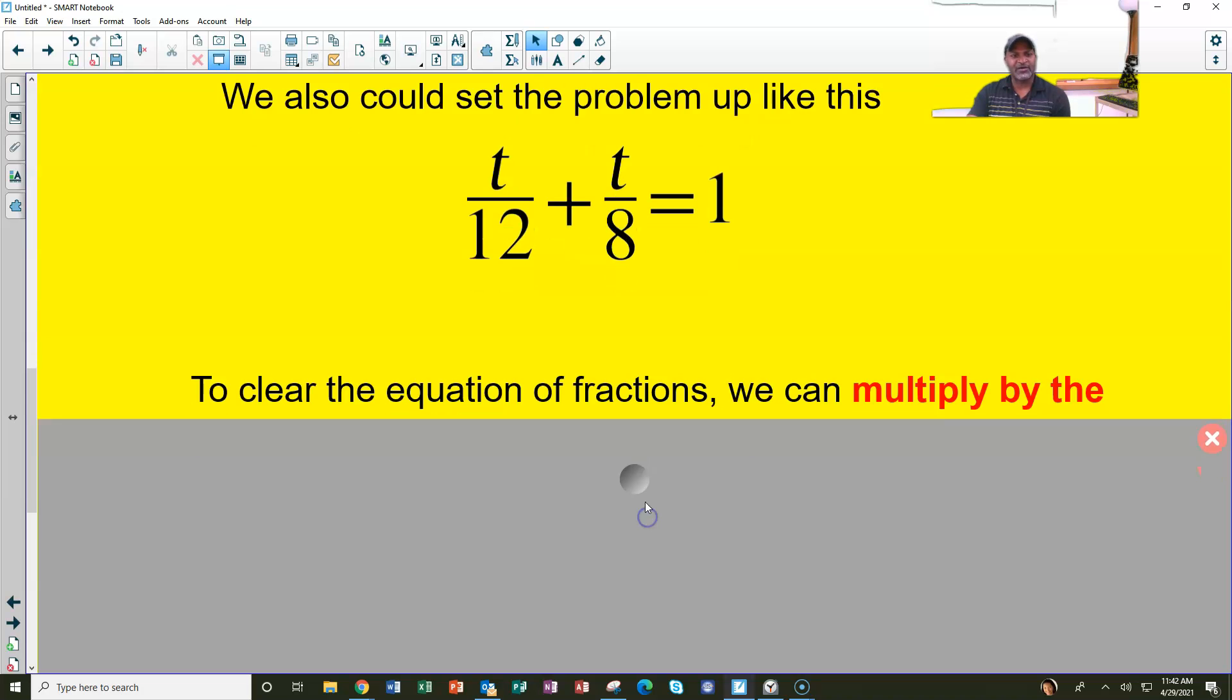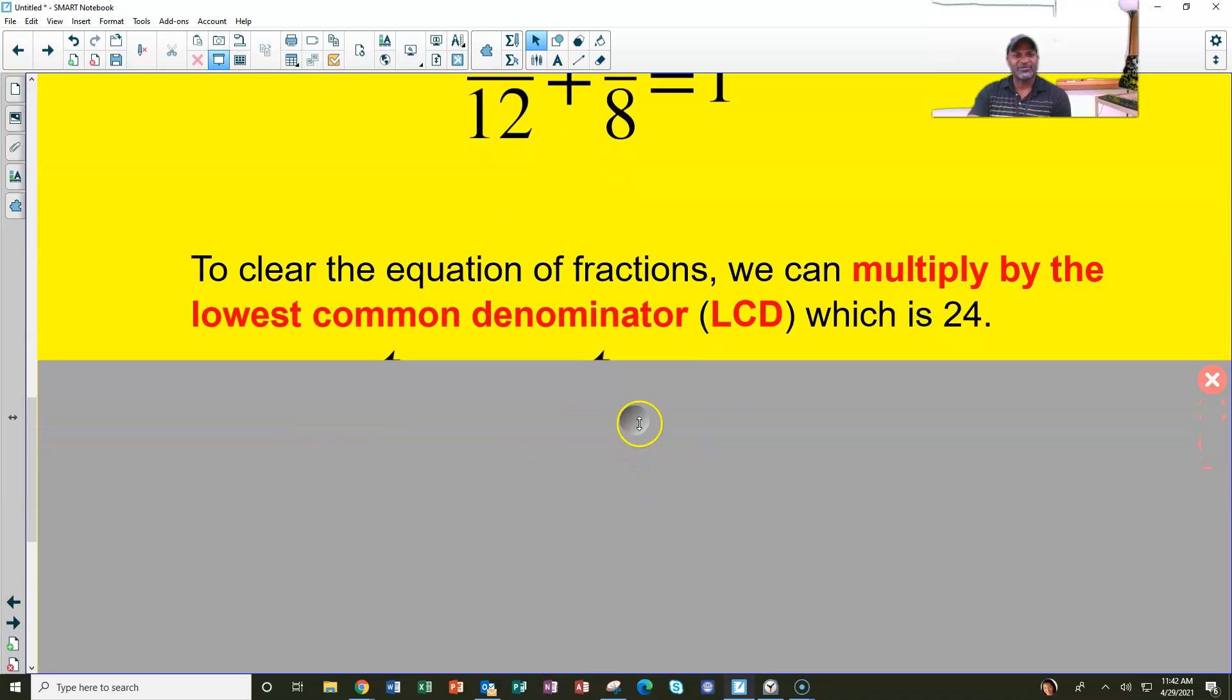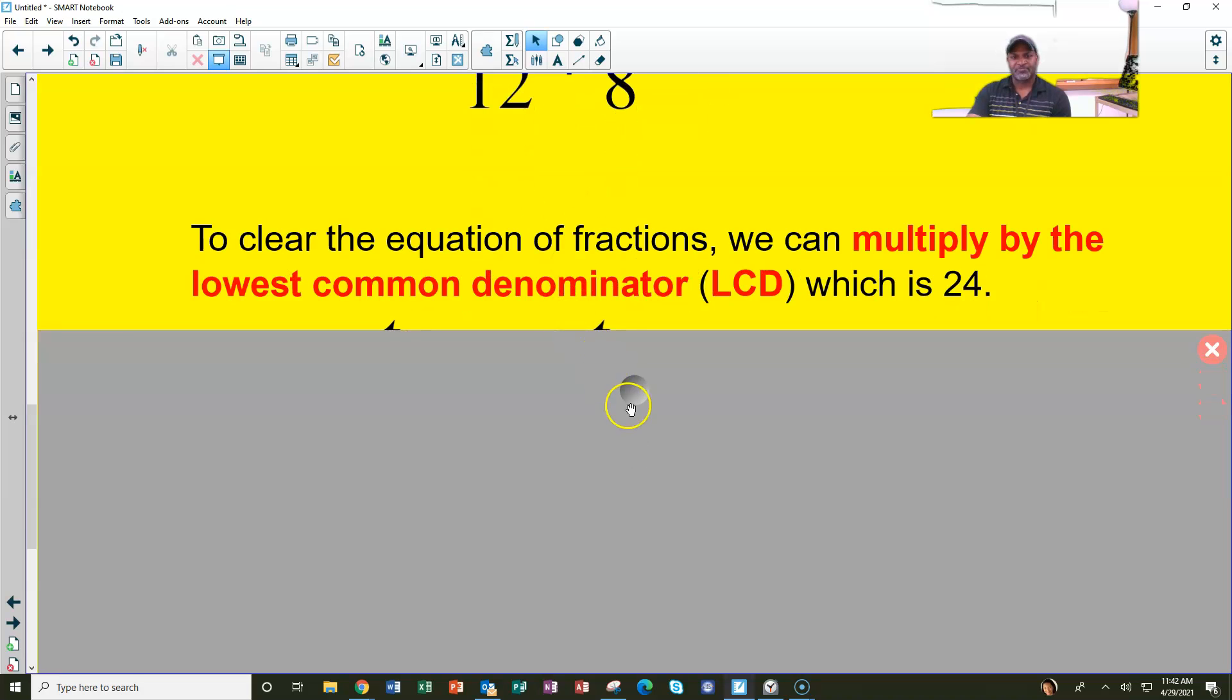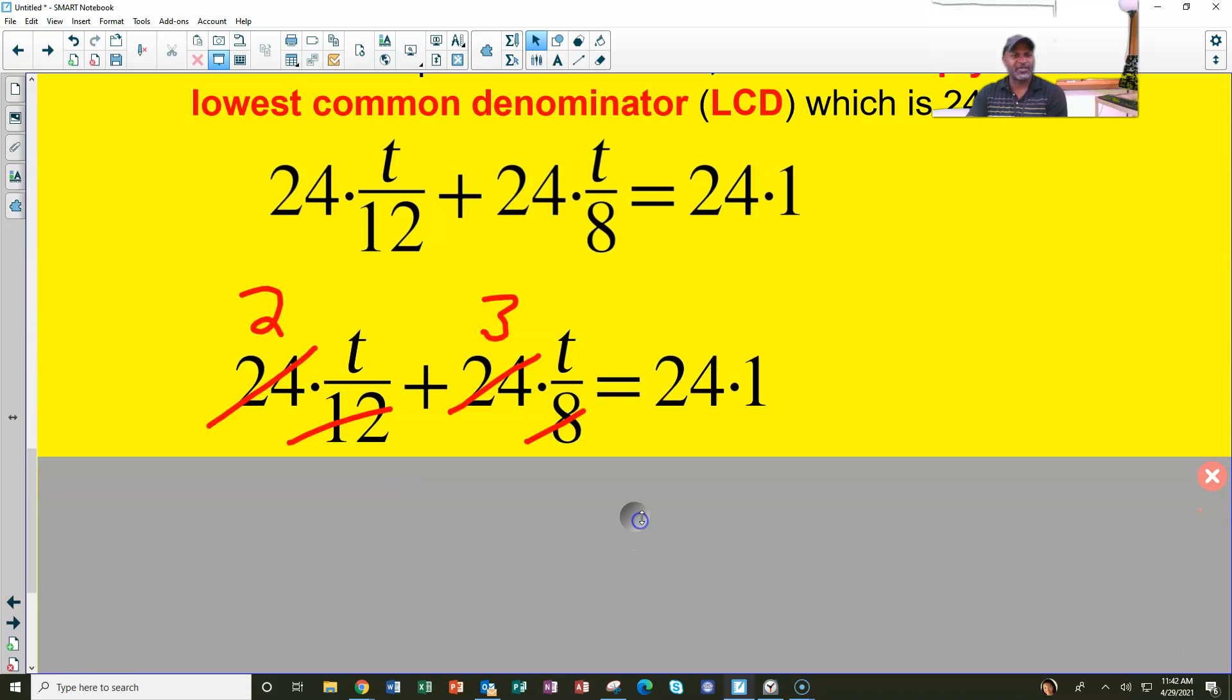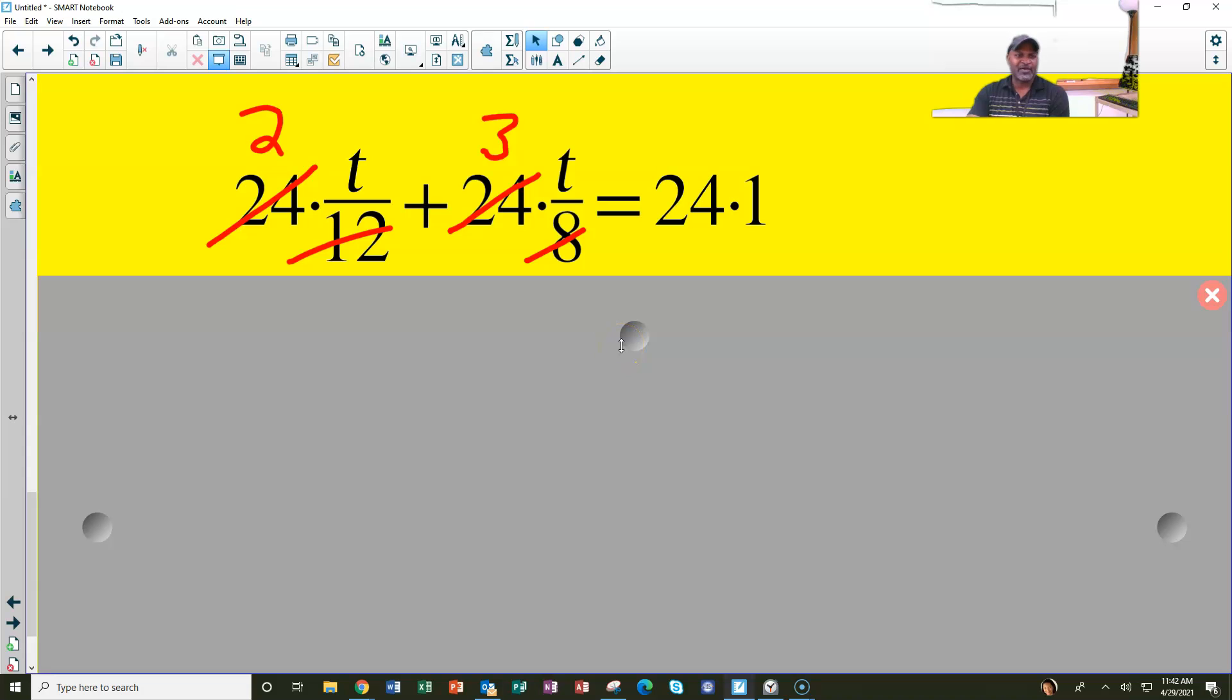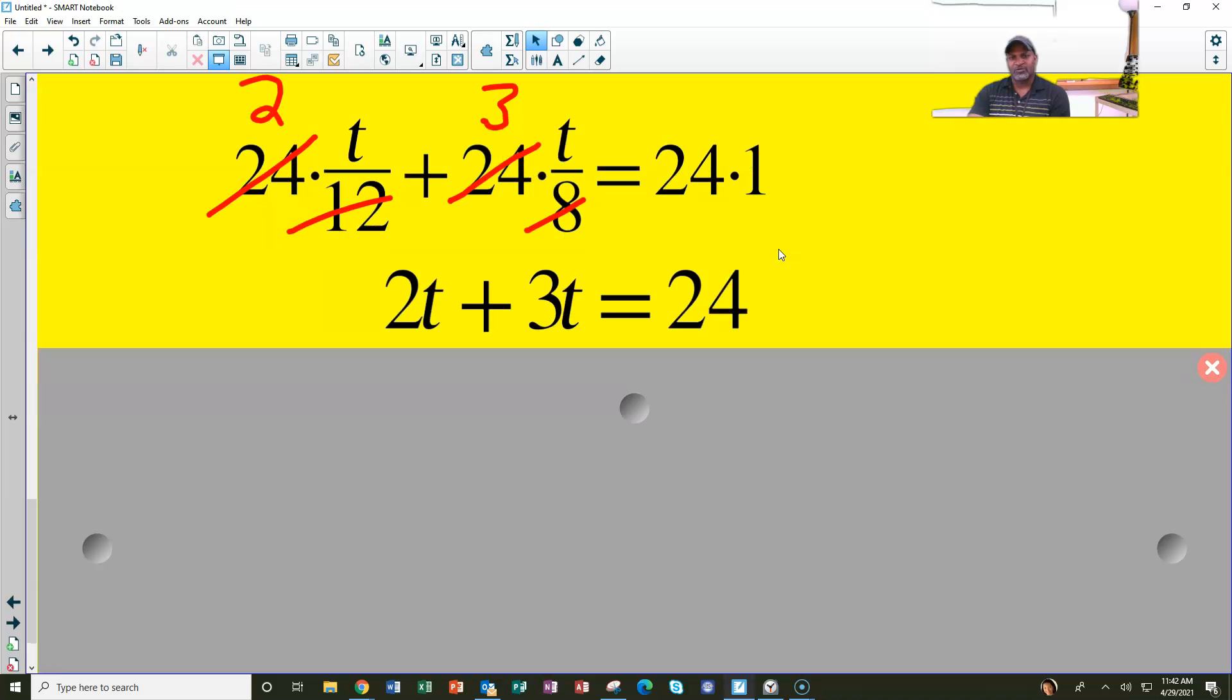So we can solve this rational equation by clearing it of fractions. We could multiply by the lowest common denominator, which is called the LCD, which is 24. 24 is the smallest number that both 12 and 8 will go into. So look what happens if you multiply everything by 24. Then the 12 is going to divide into the 24 two times. The 8 is going to go into the 24 three times. And you're going to multiply 2 by T and 3 by T. The denominators are completely gone, wiped out. There wasn't a fraction on the right. So you end up with 2T plus 3T equals 24.